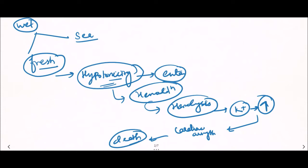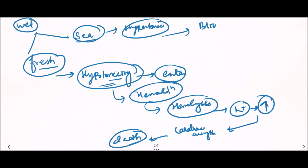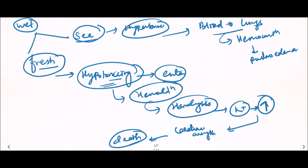In sea water drowning, sea water is hypertonic. This hypertonic water enters into the lungs and fills the airways. Water moves from blood to lungs, causing hemoconcentration, which is responsible for pulmonary edema and then respiratory failure. These are the mechanisms of death in sea water and fresh water drowning.